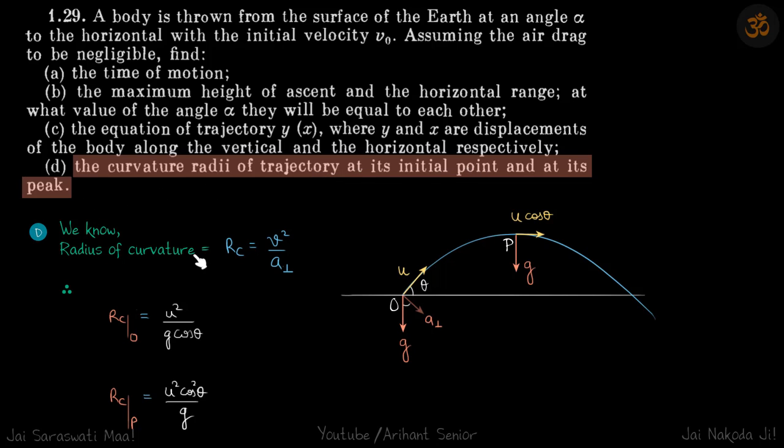The formula of radius of curvature or radius of trajectory is v squared by a perpendicular. So v is the total velocity of the particle at any time, and a perpendicular is the component of acceleration perpendicular to velocity. So again, radius of curvature is v square by a perpendicular. V is the total velocity, and a perpendicular is the component of acceleration perpendicular to the direction of motion, or you can say perpendicular to the velocity.